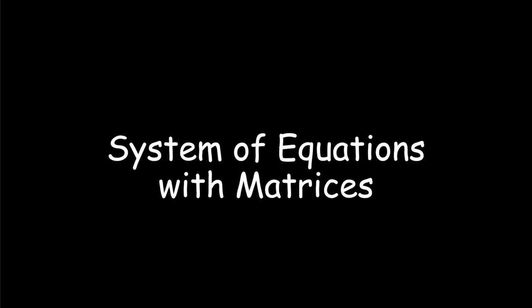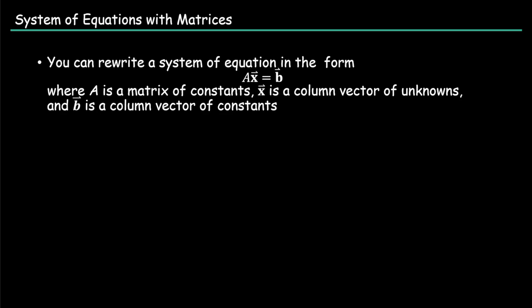With systems of linear equations, you can rewrite an equation in the form of AX equals B, where A is a matrix of constants, X is a column vector of unknowns, and B is another column vector of constants.